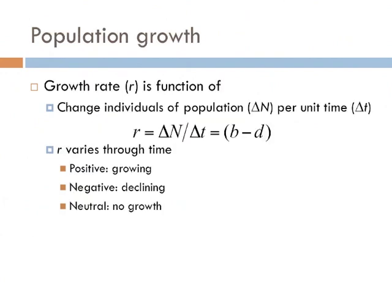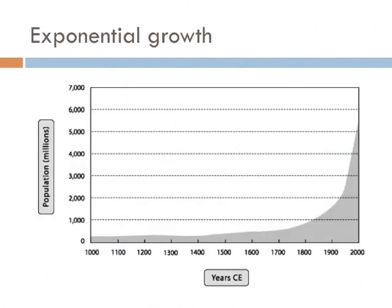Population growth is a primary component of population ecology. The growth rate of a population is symbolized by the letter R, defined as the change in the number of individuals in a population (delta N) through time (delta T). R is calculated as the number of births minus the number of deaths in a population through time, and R varies through time. If it's positive, the population is growing; if it's negative, the population is shrinking; and if R is zero, the population is neither growing nor shrinking. The human population is currently experiencing rapid growth, so R would be positive.